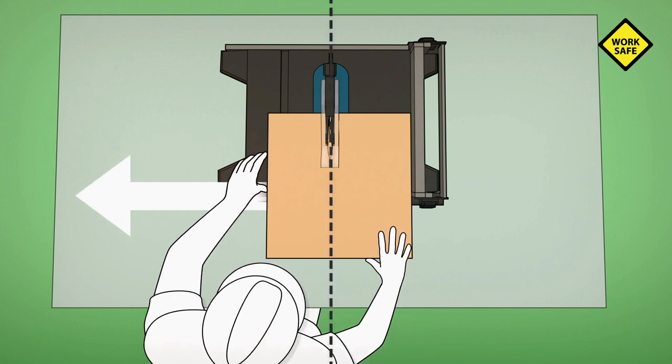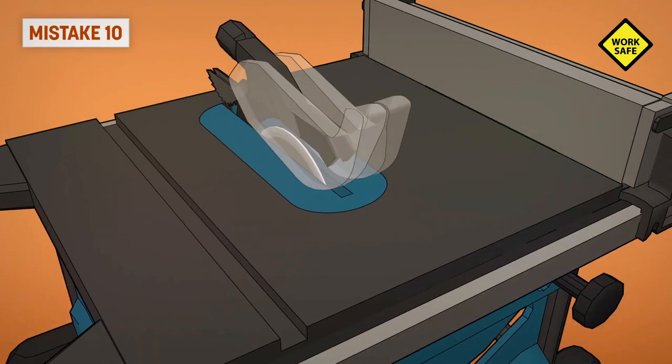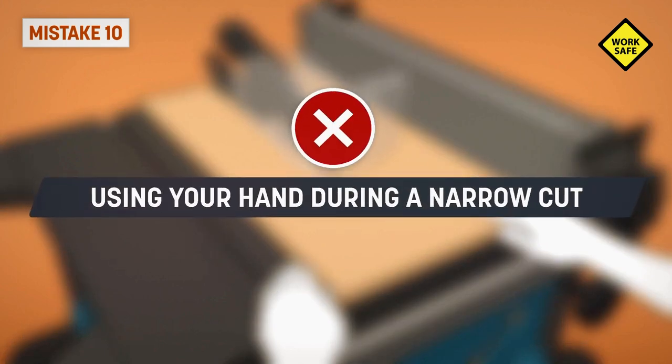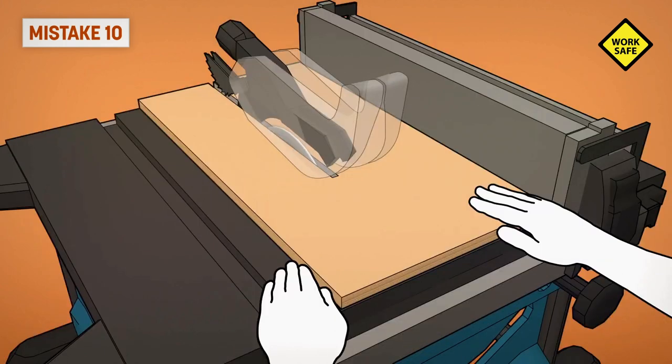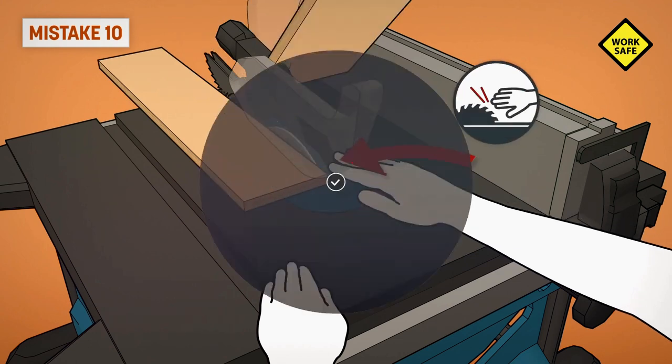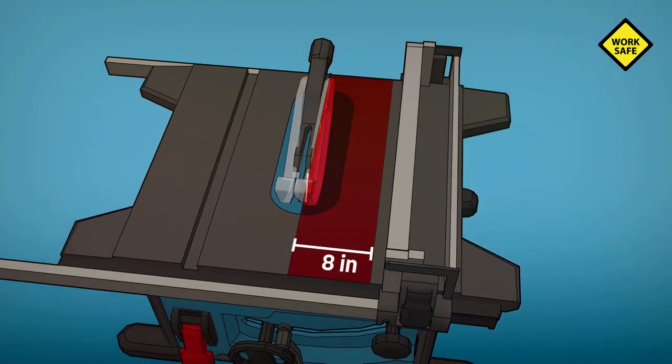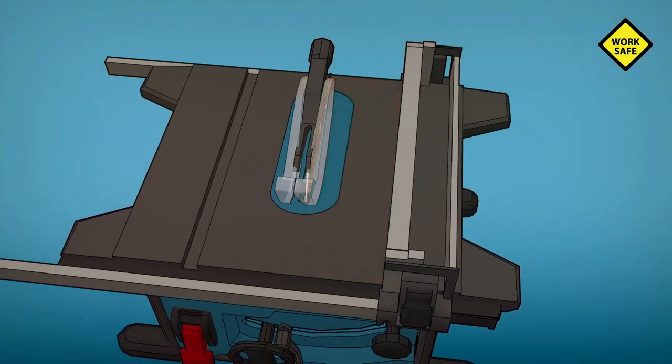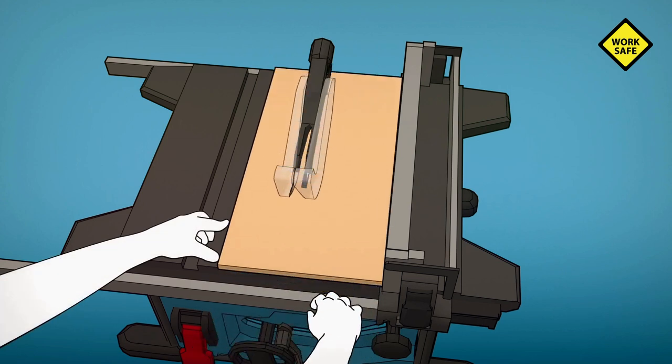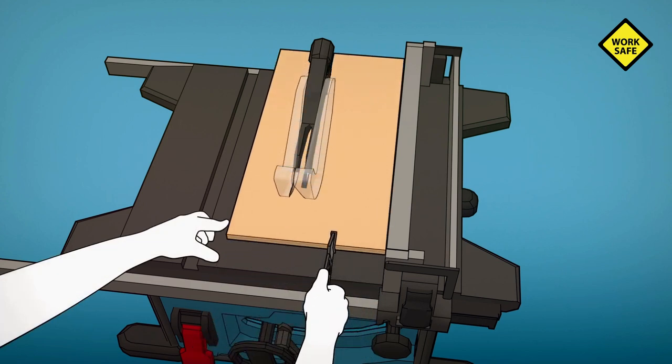Mistake ten: using your hand during a narrow cut. When your hand is too close, you can be injured when kickback occurs, even if you are careful and even if there is a blade guard. When making a cut with the blade and fence eight inches apart or less, you need to use a push stick. Use it when you get to the table, all the way through the cut, and to push the cutoff piece behind the blade.